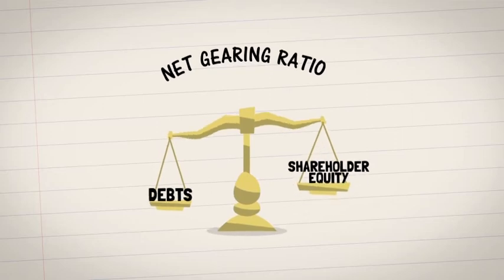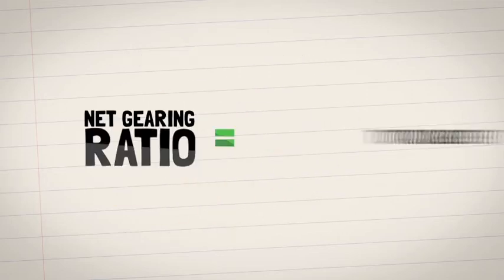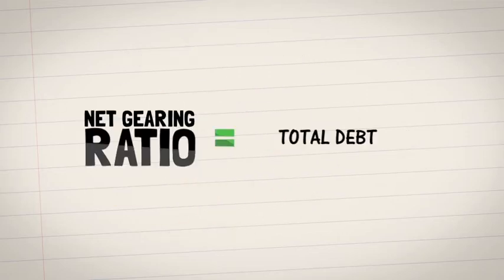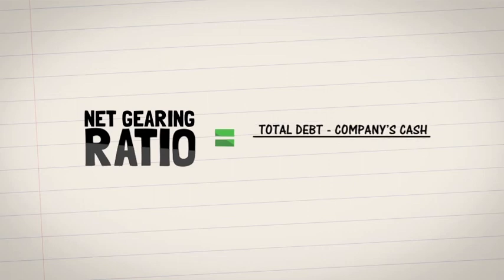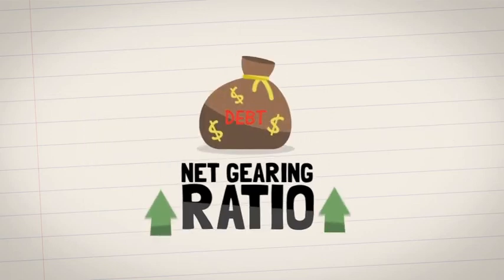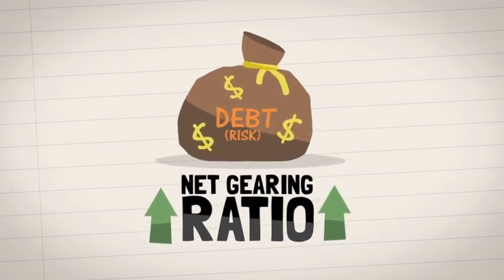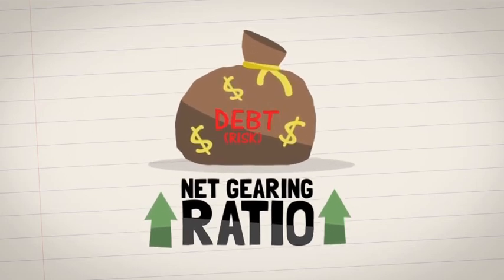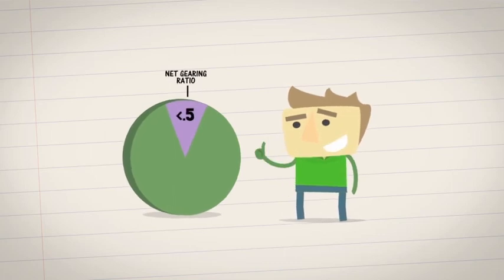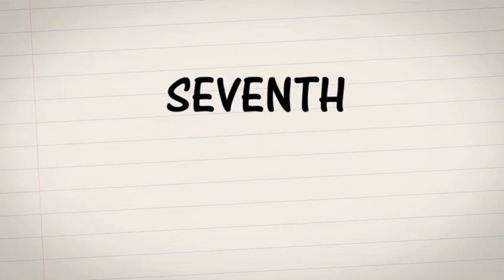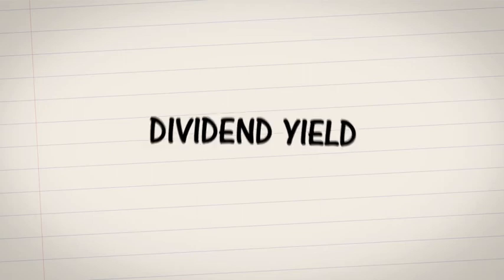The sixth essential ratio is the net gearing ratio. This measures a company's debts against its shareholder equity. To calculate this ratio, first take the total debt and subtract the company's cash, then divide that number by the equity. The higher the ratio, the more debt and therefore risk the company has. Look for a net gearing ratio of 0.5 or less.